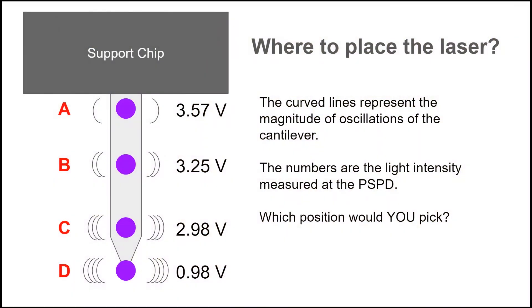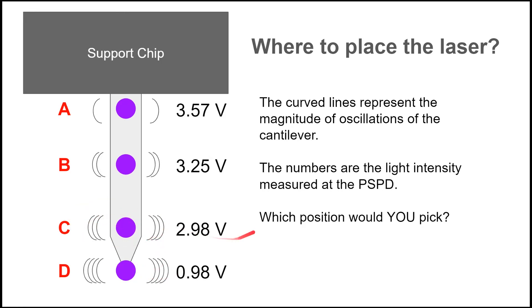In the previous video, it was difficult to see the laser as it moved down the cantilever. A cartoon shows a laser spot at four potential points along the cantilever. The intensity of the laser light decreases as you move down the cantilever, whereas the magnitude of the oscillations increases as you move down it. The optimal laser point is around point C, where the intensity is still quite high and the oscillation amplitude is also sufficient for good measurements.